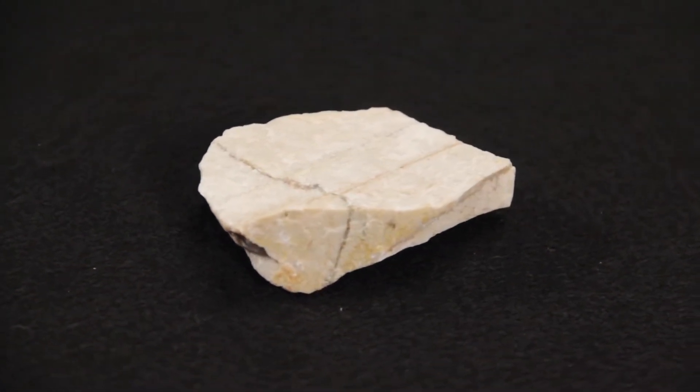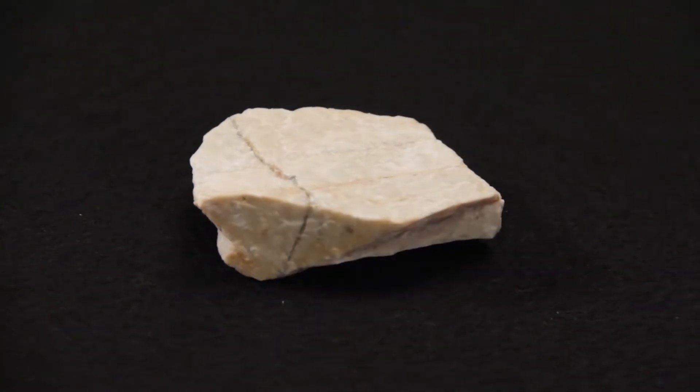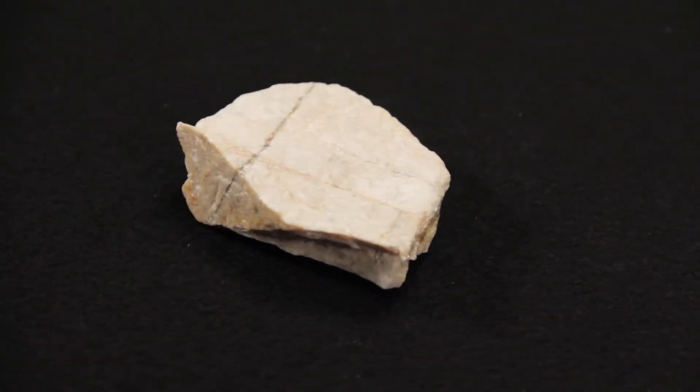As we examine a specimen of feldspar, we observe that it does not look like a metal, so we can assign it to a non-metallic luster.